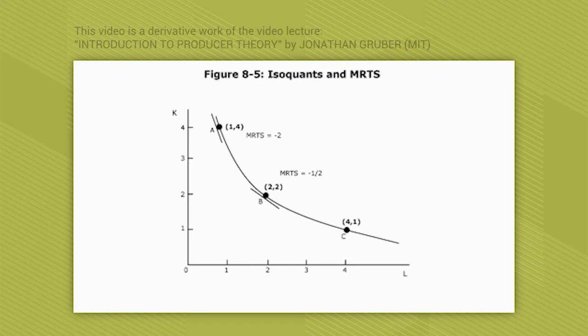The marginal rate of technical substitution varies along the isoquant. Starting at point A with 4 units of capital and 1 unit of labor, adding a second unit of labor gives an MRTS of −2: one unit of labor is worth 2 units of capital. At that point we're very capital-intensive, so a next unit of labor is very valuable. At point C, with 4 units of labor and 1 unit of capital, you'd be willing to give up 2 units of labor just to get 1 unit of capital — the MRTS is now −½. When you're very labor-intensive, you're happy to trade a lot of labor for a little capital.